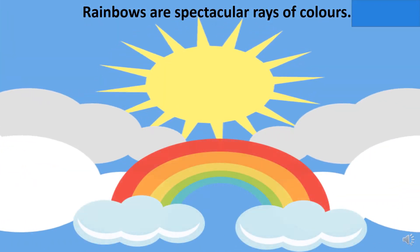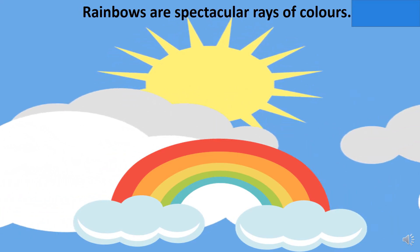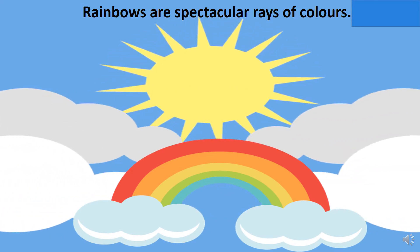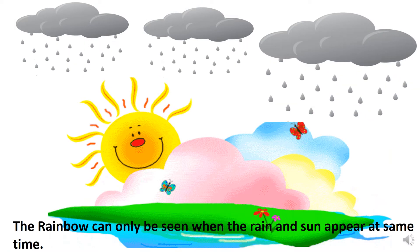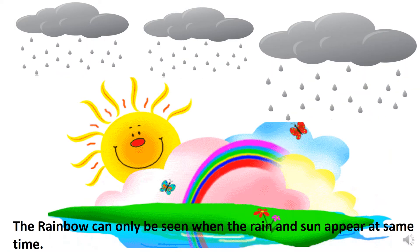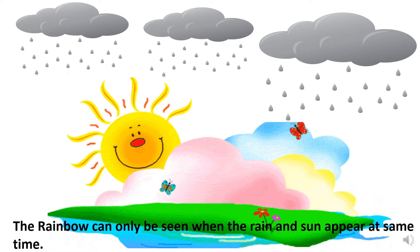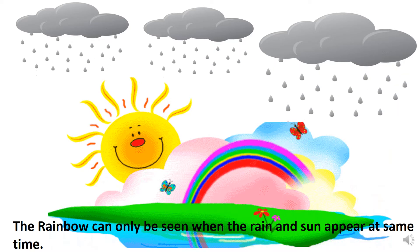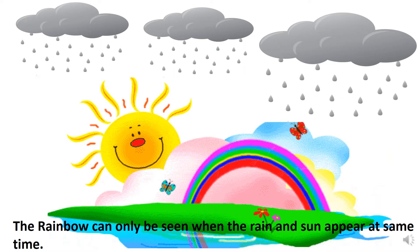Rainbows are spectacular rays of colors. The rainbow can only be seen when the rain and sun appear at the same time.